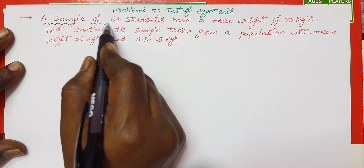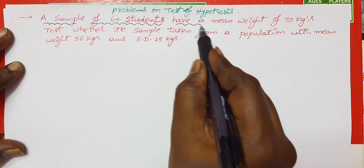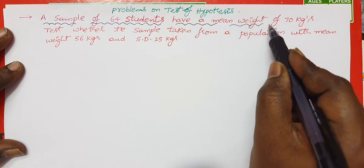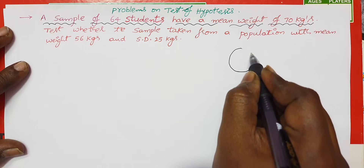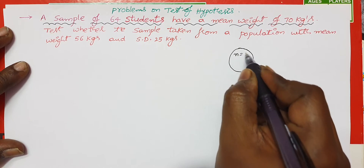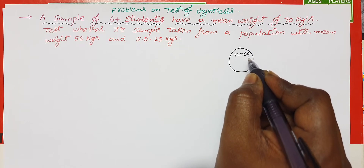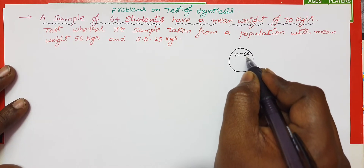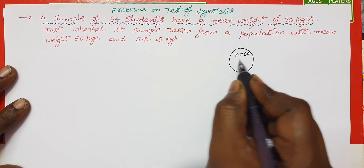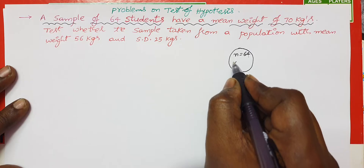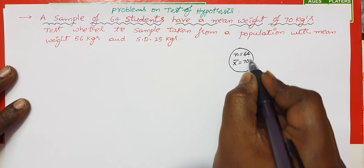A sample of 64 students have a mean weight of 70 kgs. The sample size n is 64, which is a large sample. The average of 64 students is the sample mean X-bar, which is given as 70 kgs.